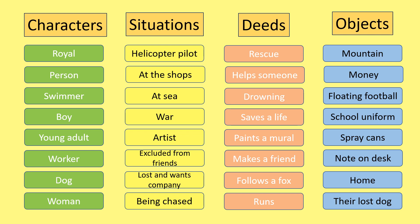Characters might be a member of the royal family, an ordinary person, a swimmer, a boy, a young adult, a worker, a dog or a woman. Situations: helicopter pilot, at the shops, at sea, war, an artist, excluded from friends, lost and wants company, being chased. Deeds: a rescue, helping someone, drowning, saving a life, painting a mural, making a friend, following a fox or running. Objects: a mountain, money, a floating football, school uniform, spray cans, a note on a desk, home or their lost dog.